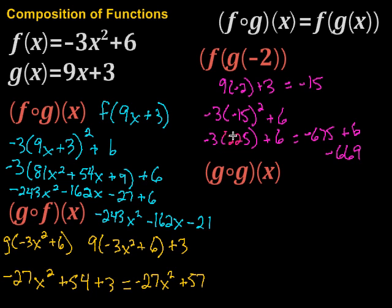Now for this last one, we're taking g composed with g. So that means we're going to take g of x and insert it into the g of x function. So for that one, what I'm going to have is g of 9x plus 3, and then that means I'm going to put the 9x plus 3 into the g function for the x. So then I have 9 times 9x plus 3, plus 3.